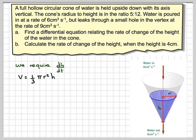Well, we are told that the ratio of the radius to the height is 5:12. So that means r/h = 5/12, and therefore we can rewrite r as 5h/12.